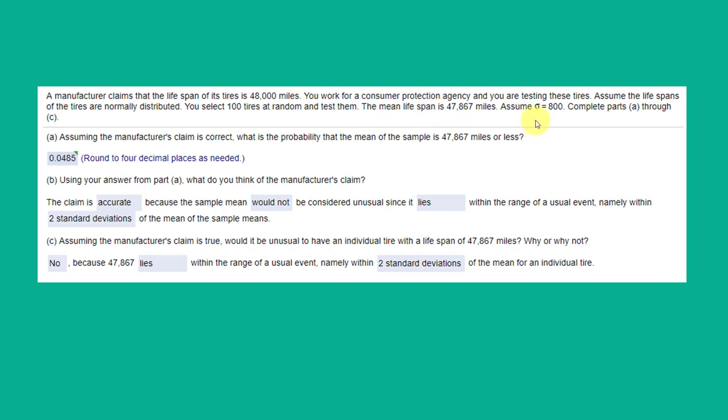You assume the population standard deviation sigma is 800. There are three parts to the question. The first is assuming the manufacturer's claim is correct, what is the probability the mean of the sample is 47,867 or less? Part B is using the answer from part A, what do you think of the manufacturer's claim that the lifespan is 48,000 miles?